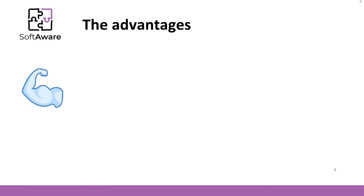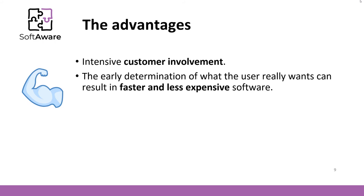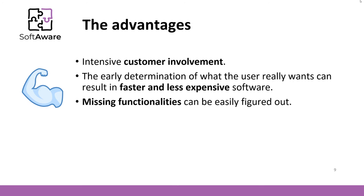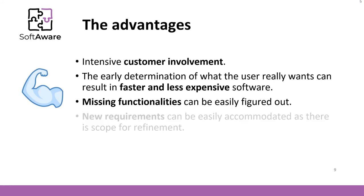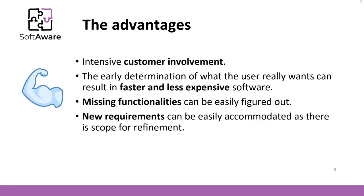The prototyping model inherits many advantages of iterative models. There is quite intensive customer involvement — even more intensive when compared to agile methods. The early determination of user needs sometimes allows us to build software faster. Because of frequent customer involvement, missing functionalities can be easily figured out. Also, this model embraces changes, as refinements are a part of the model.